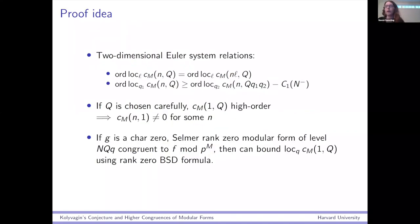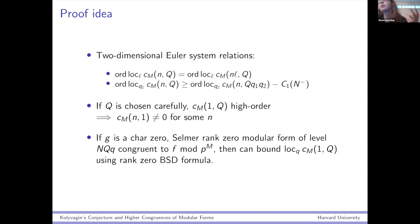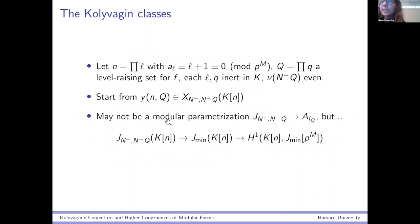Let me recall the structure of the proof and what we have left to do. We have these two-dimensional Euler system relations. Both these relations just come from geometric facts about how these CM points are related to each other on the different Shimura curves of the different conductors. But to translate the geometric things into relationships for these cohomology classes, you get this little error because we've defined these classes using this non-canonical map that could be losing some information.